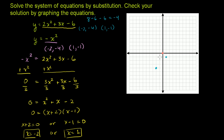When x is positive or negative 1, y is going to be negative 1, because you square it and take the negative. When x is positive or negative 2, y is going to be negative 4. So the graph will look something like that — a downward opening parabola. That is the first equation.